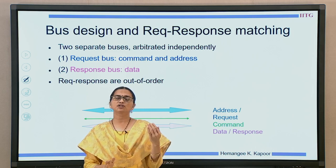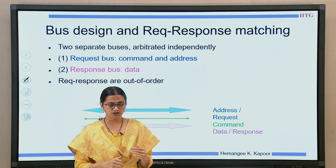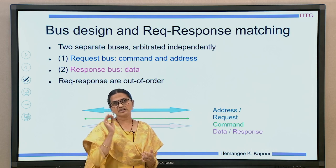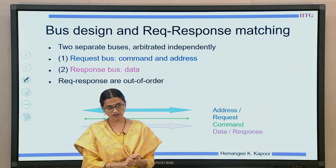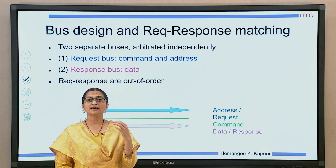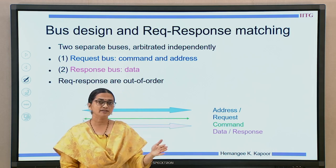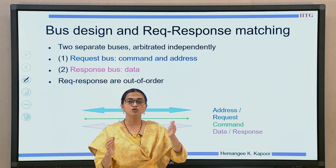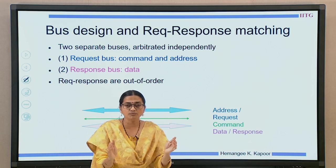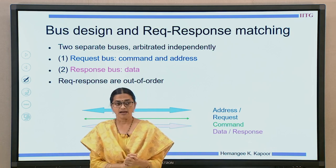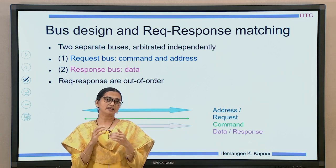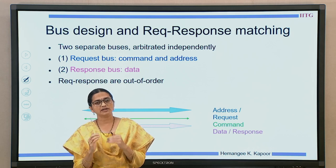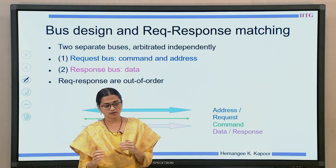They will see this request passing through and they have to take appropriate action. Subsequently, a response will be generated. Responses are mainly acknowledgements and data transfer. You need a separate bus for sending the response because your request bus could at this moment be used by somebody else, so you need another set of wires to send your response.